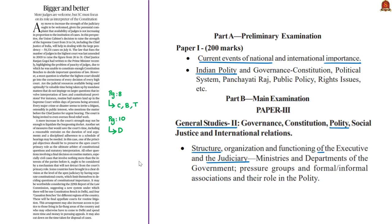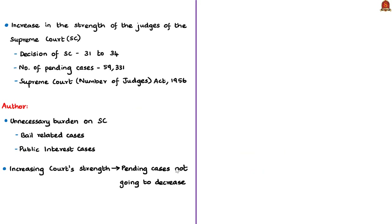The next editorial discusses the recent increase in Supreme Court judge strength. The Union Cabinet has decided to raise the number of Supreme Court judges from 31 to 34, including the Chief Justice of India. As of 11th July, the Supreme Court had 59,331 pending cases. The previous amendment to the Supreme Court Number of Judges Act 1956 had increased strength from 26 to 31, including the Chief Justice.